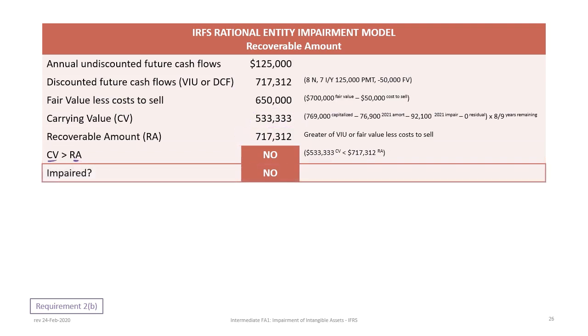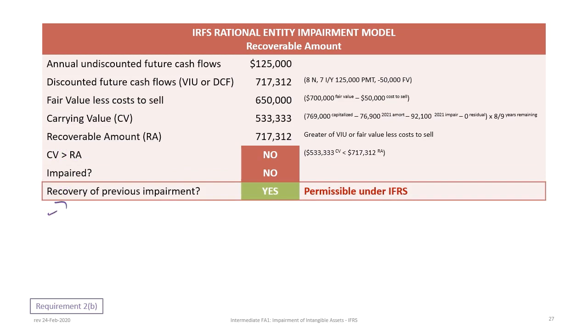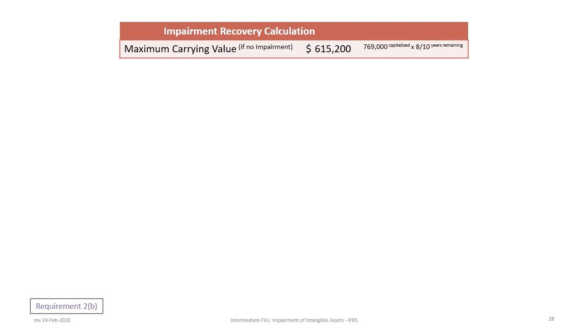Since the carrying value is less than the recoverable amount, there is no impairment. But we can ask a third question: can we recover previous impairment losses? Under IFRS, the answer is yes. To calculate the recovery, we determine the maximum carrying value as the original capitalized amount times eight over ten years, which is $615,200 — as if no impairment had occurred. The carrying value including impairment is $533,333, so we can recover $81,867 in previous impairment losses.